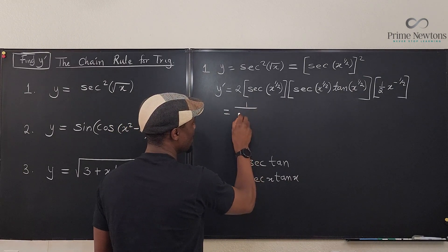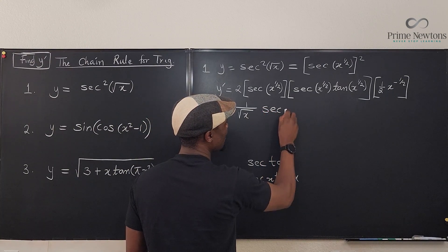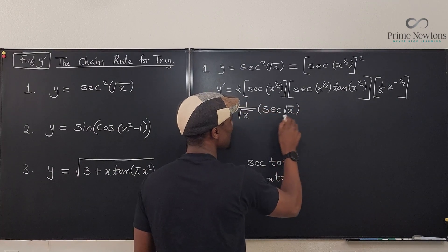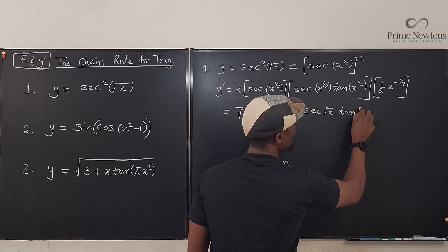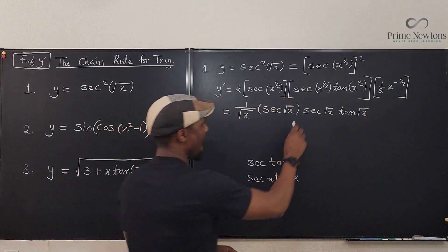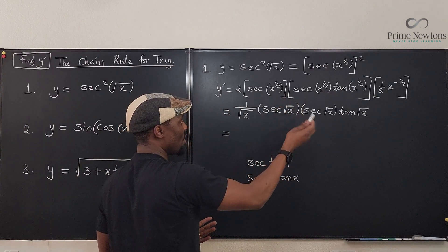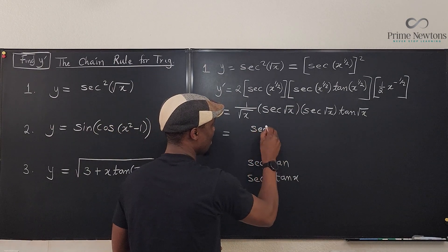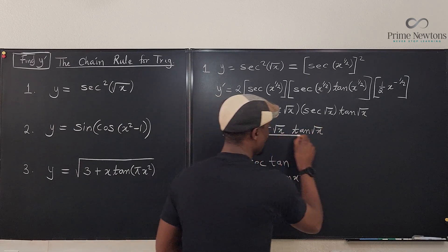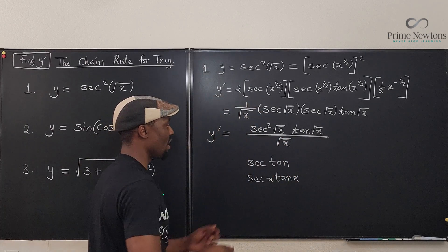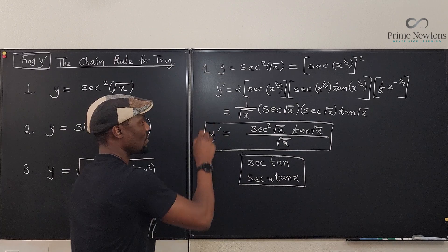So I have one over the square root of x multiplied by secant of the square root of x times tangent of the square root of x. I can multiply the two secant factors together so that my answer is secant squared of the square root of x times tangent of the square root of x, all over the square root of x. This is my y prime for the first question.